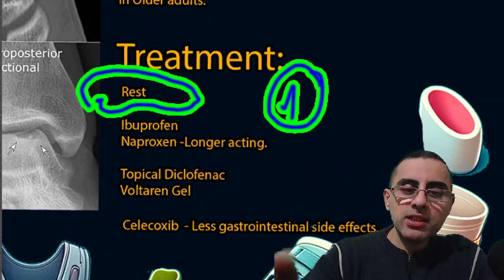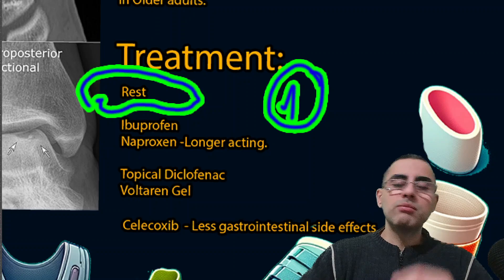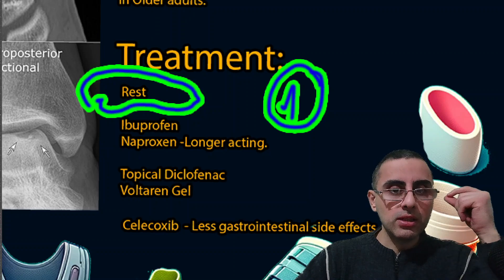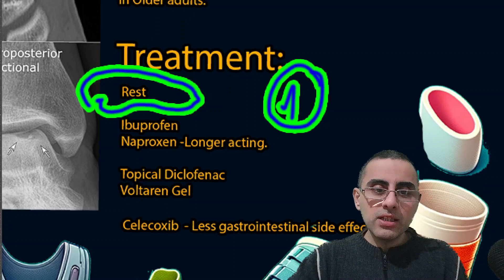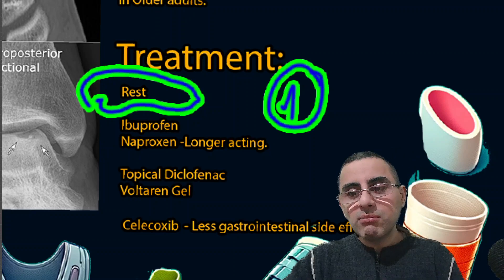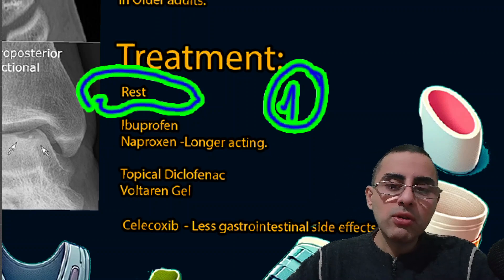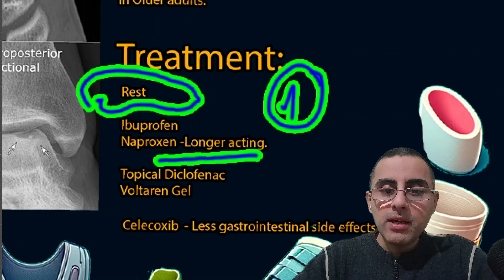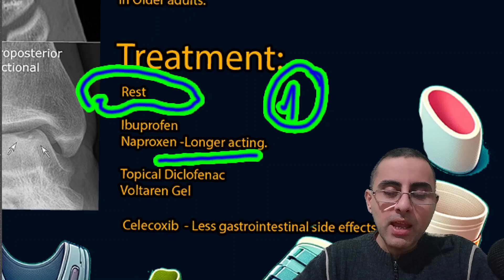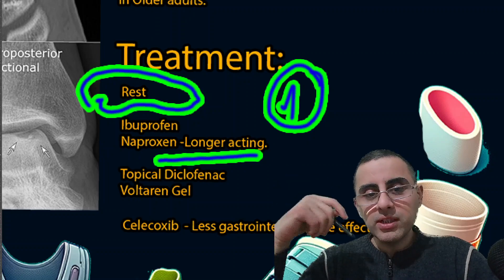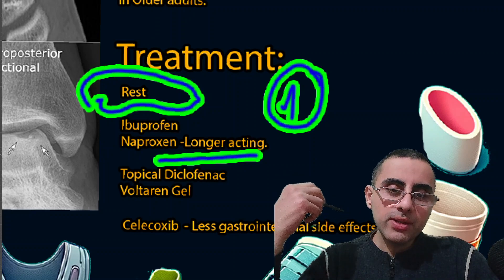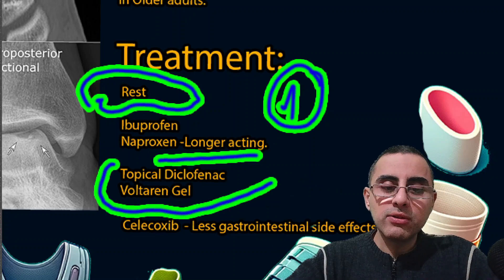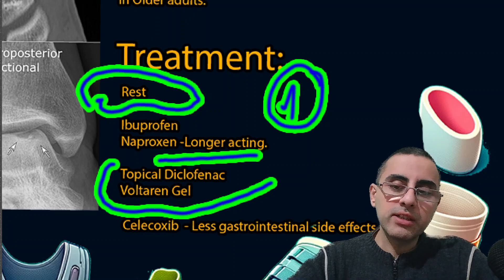The second treatment is medications. The most commonly used medication is ibuprofen. The second most common is naproxen, which is a longer-acting drug compared to ibuprofen. If a person has gastrointestinal problems when taking NSAIDs such as ibuprofen or naproxen, then an option is topical diclofenac gel, also known as Voltaren gel.